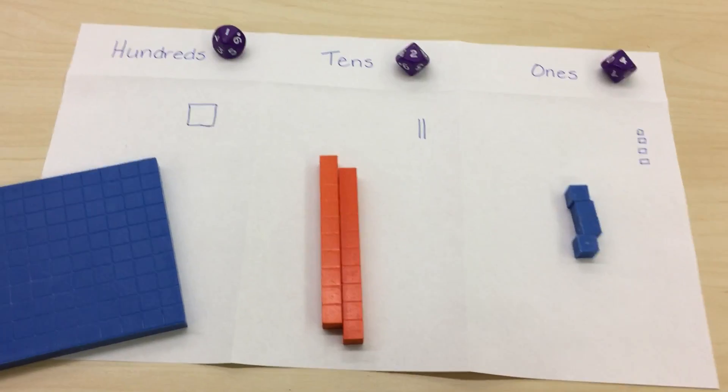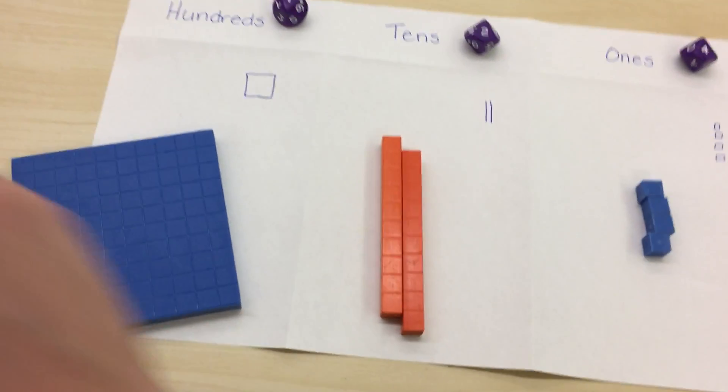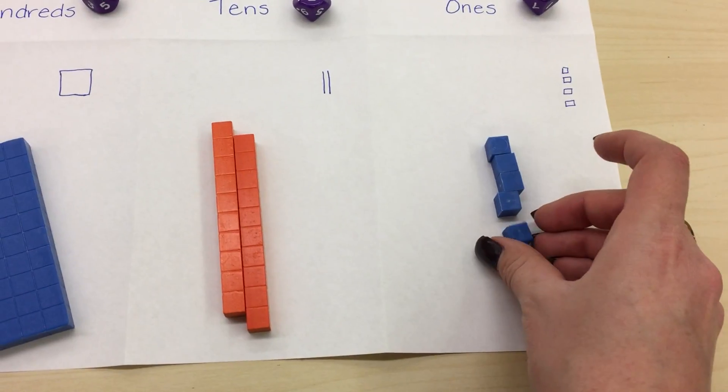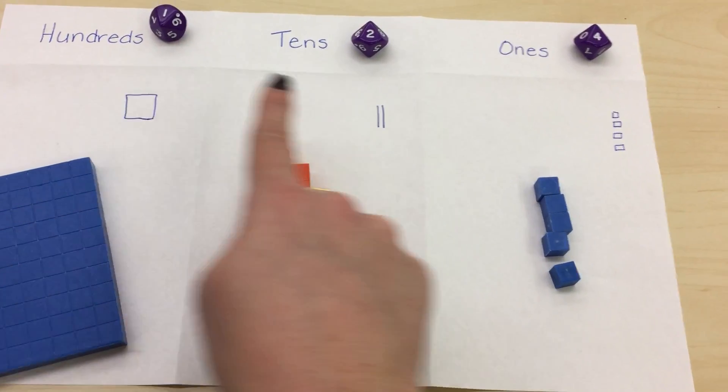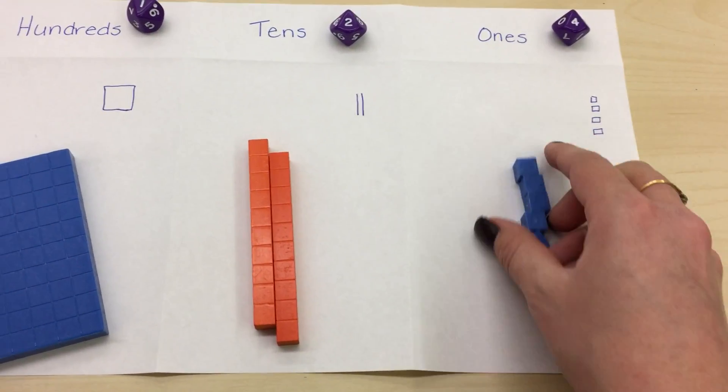If we were practicing counting on, I would add one unit and know that now I've made one hundred twenty-five.